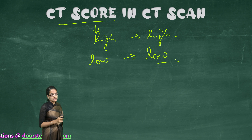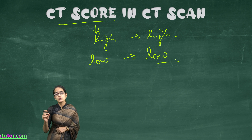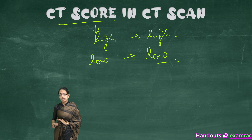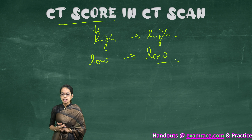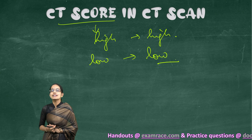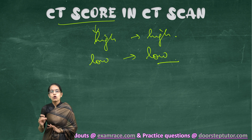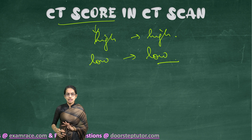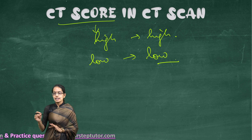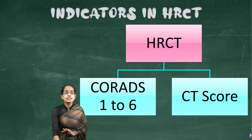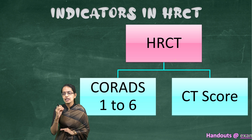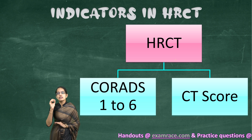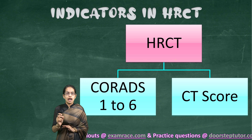Sometimes the gold standard RT-PCR test returns a false negative, meaning COVID-19 patients are not identified. To identify such patients, either a chest X-ray or CT scan is done. When performed, we look for glass granular patches in the lungs, which show the presence of the virus.